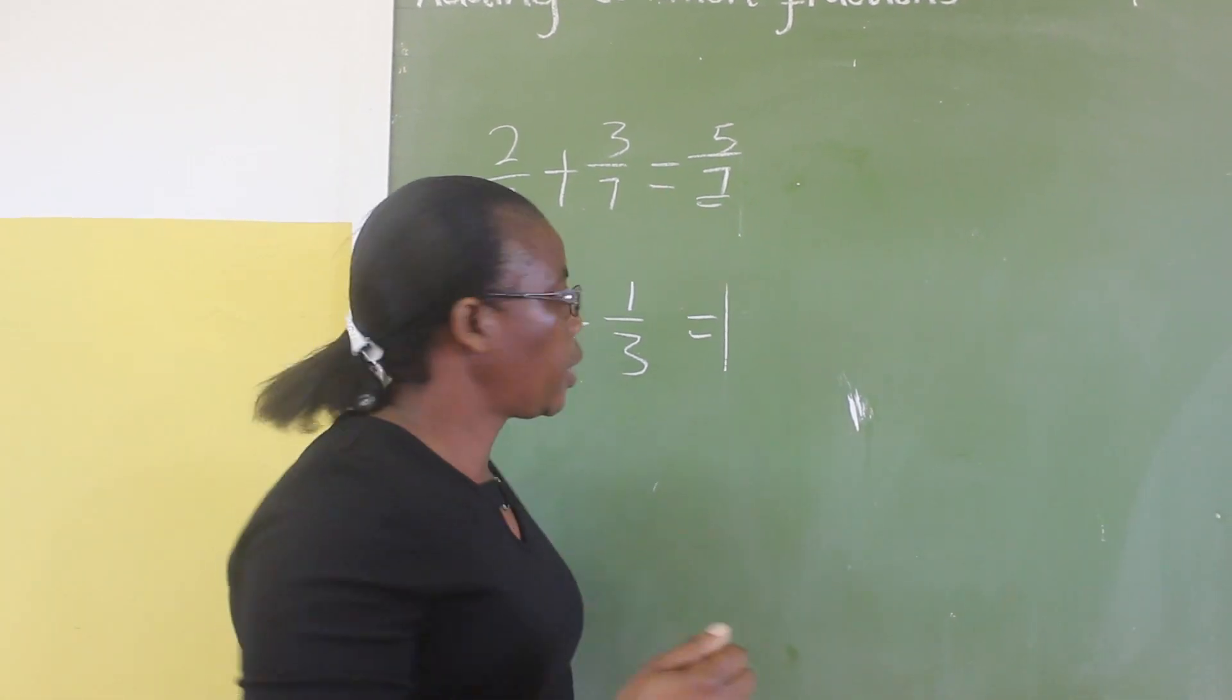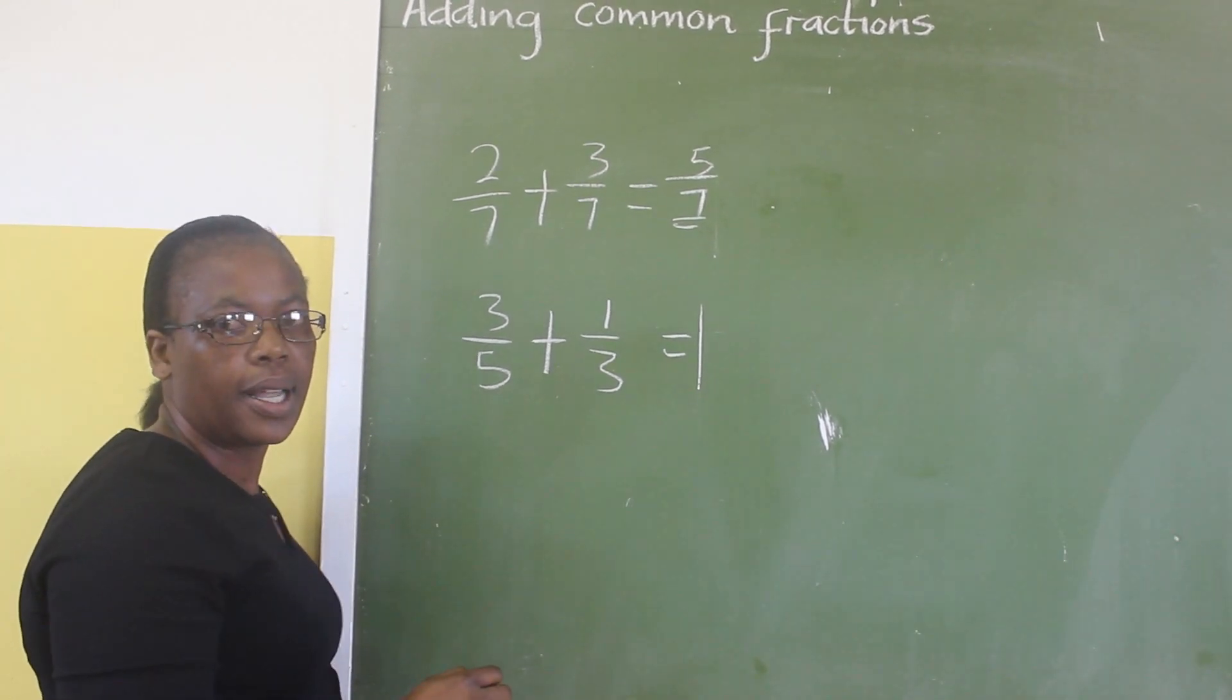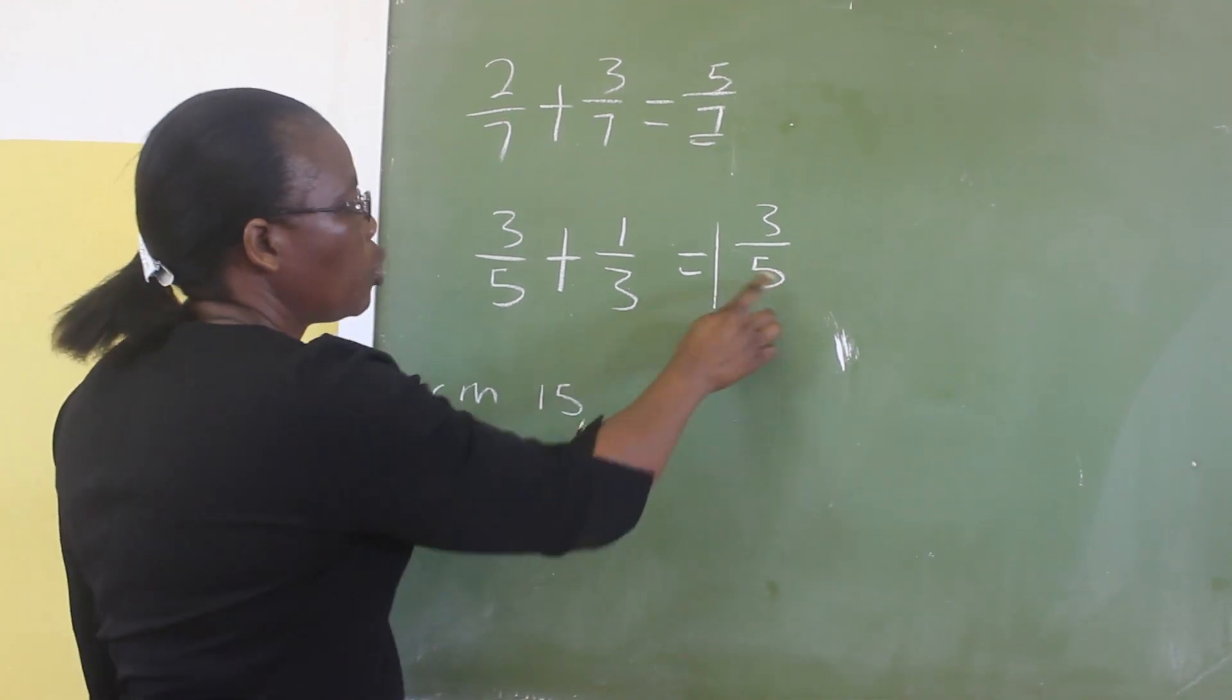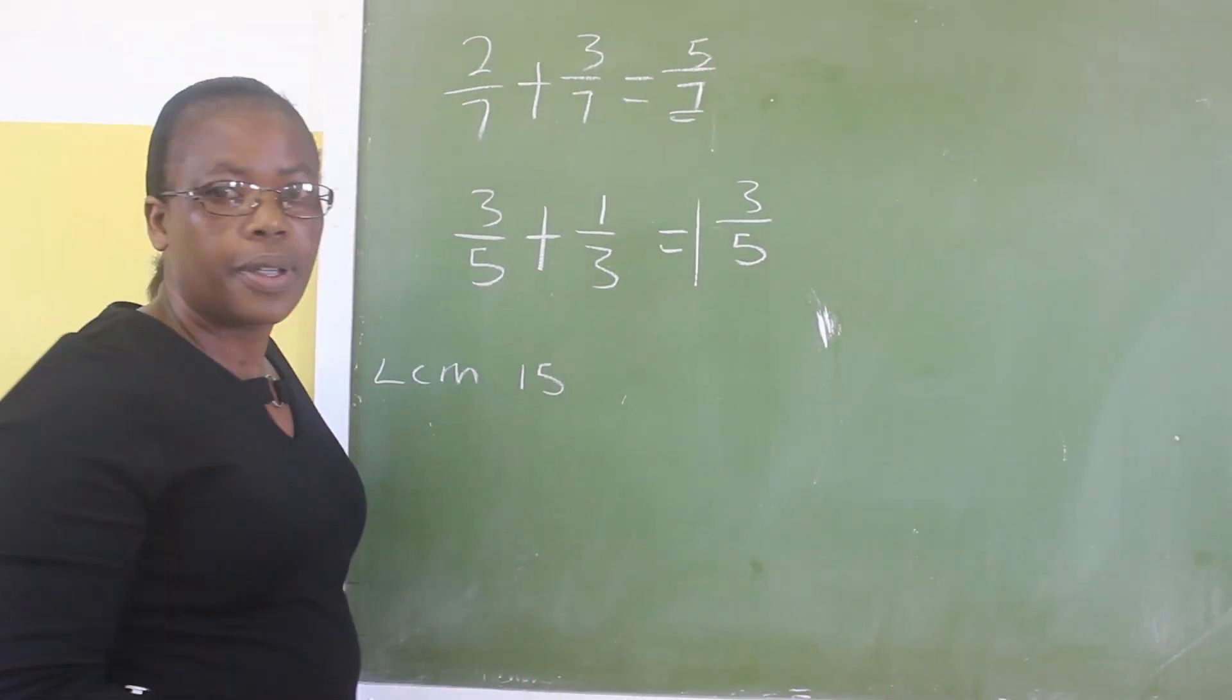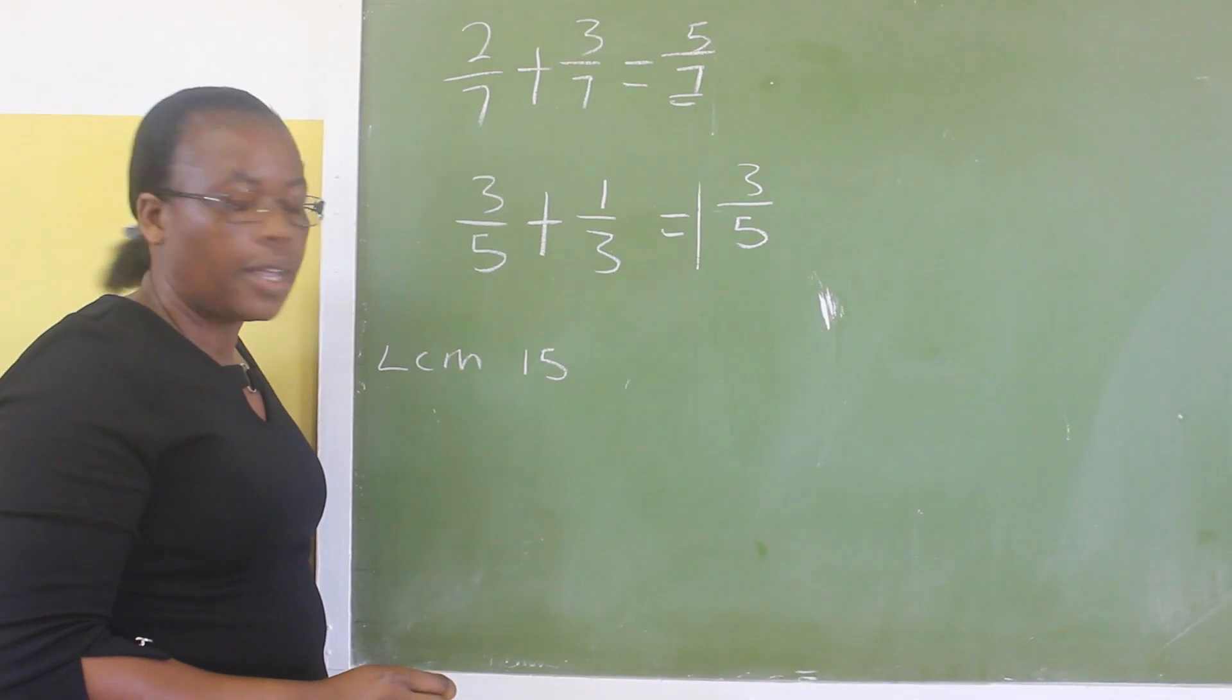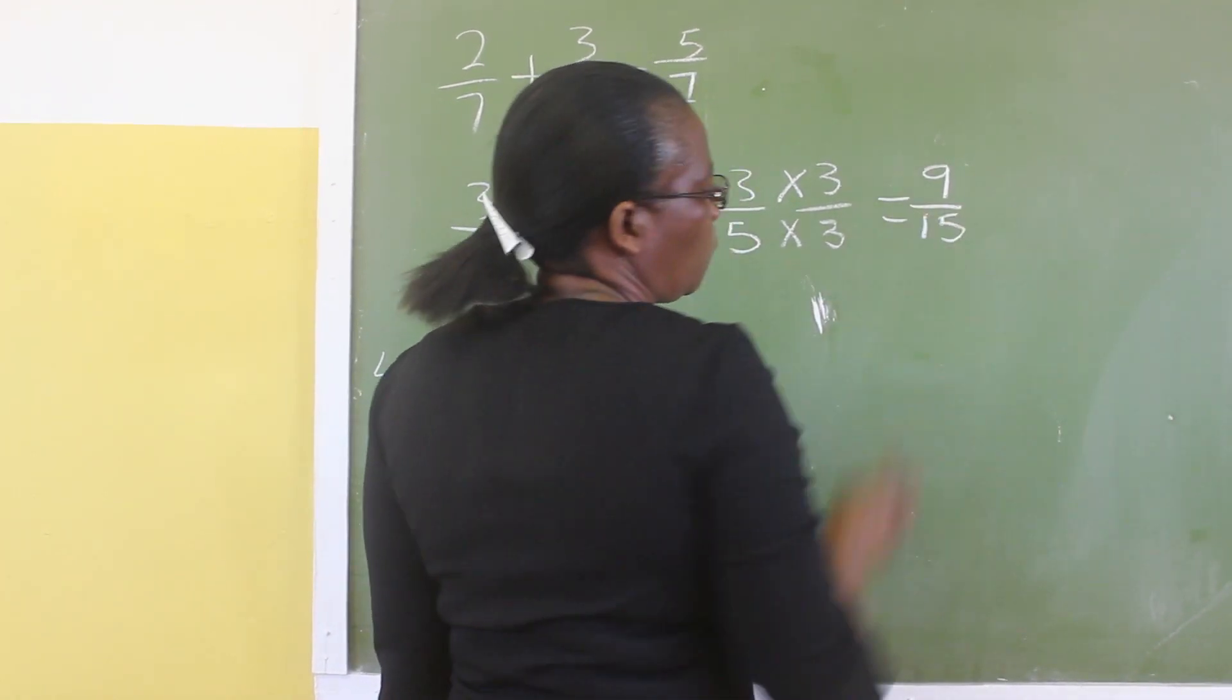In here, we are saying our common multiple is 15. So we want to change the denominators to 15. Let's start with the first fraction, which is 3 over 5. We want to change this denominator to 15. That means we are going to multiply 5 by 3. You divide the lowest common multiple by this denominator 5, and you get 3. So you multiply the numerator by 3 and the denominator by 3. So the answer is 9 over 15.